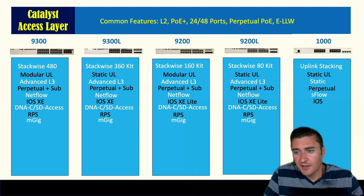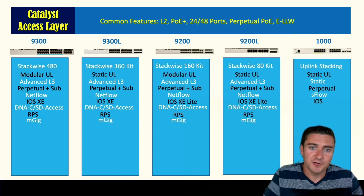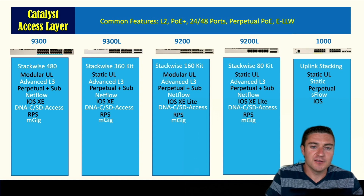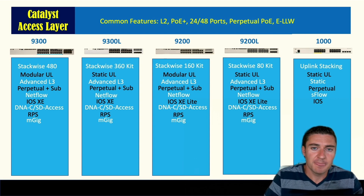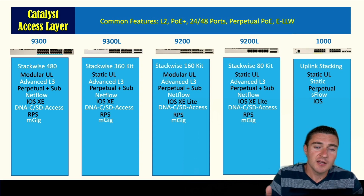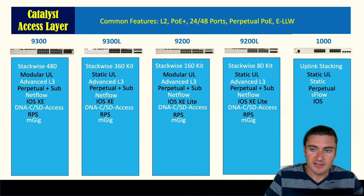M-gig — multi-gigabit Ethernet — is a got-to-have feature. All the new access points support over 1 gigabit per second. With M-gig, even on older Cat5e cable, you can get 2.5 or 5 gigabits per second to that access point. You need this for anything 802.11ax or any of the new Wi-Fi standards.